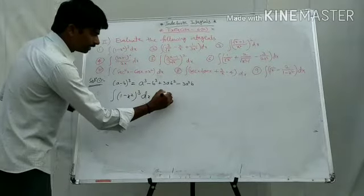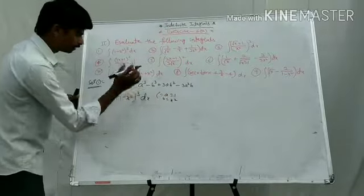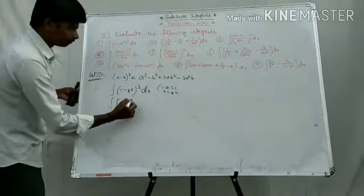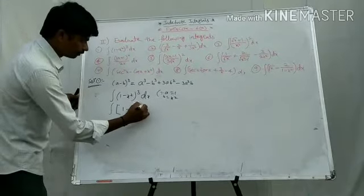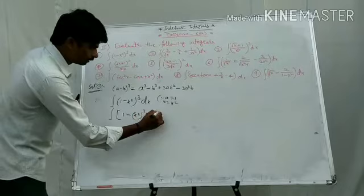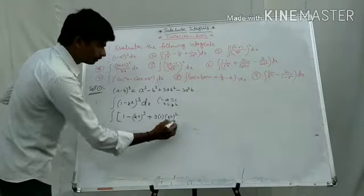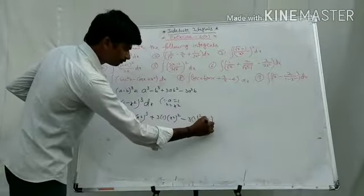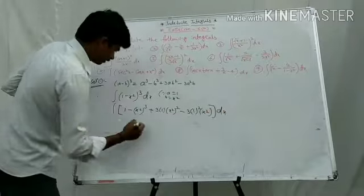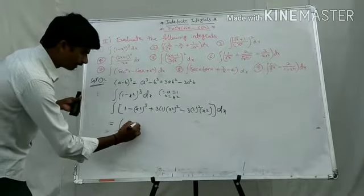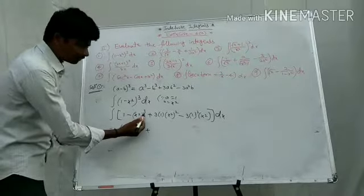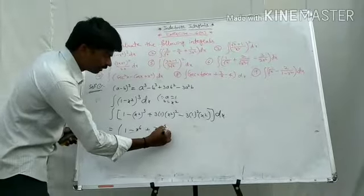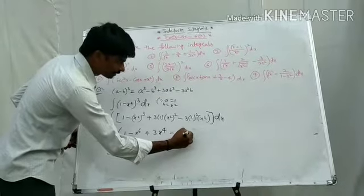Here a equals 1, b equals x squared. Substituting, the integral becomes: 1 cubed minus (x squared) whole cube plus 3 into 1 into (x squared) whole square minus 3 into 1 squared into x squared, into dx. That equals integral of 1 minus x to the power 6 plus 3x to the power 4 minus 3x squared dx.